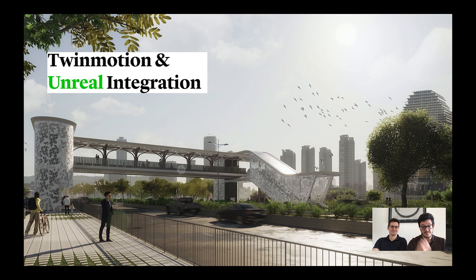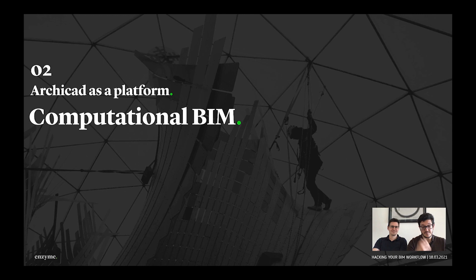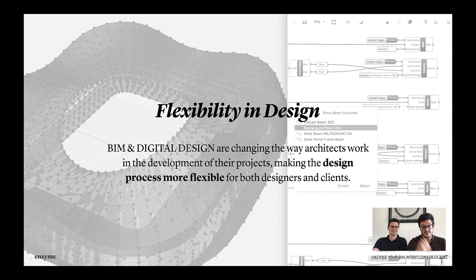Another great workflow is the connection between ArchiCAD and Twinmotion, and also now the connection between Twinmotion and Unreal — this creates a really powerful loop in which you can generate very compelling images and animations to communicate our design. Talking about computational design and using ArchiCAD as a platform — the real value of these workflows is the flexibility in design. If we focus on the design process with parametric thinking, we can use parameters to automate different design options.